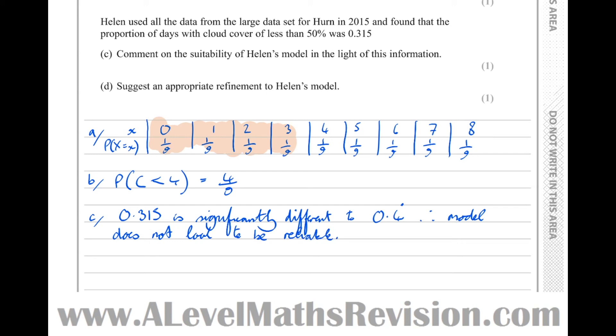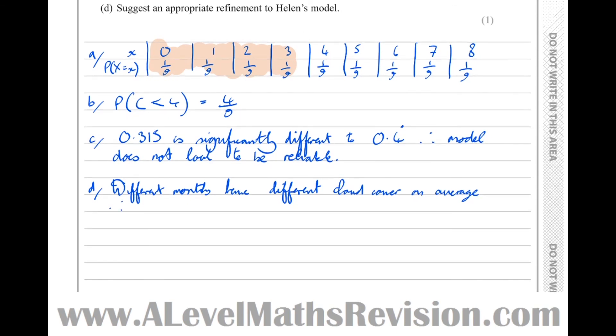And then finally, suggest appropriate refinements to Helen's model. Well, we could have a different model for each month. We could take into account that different months have different type of cloud cover. So different months have different cloud cover on average, therefore take this into account.